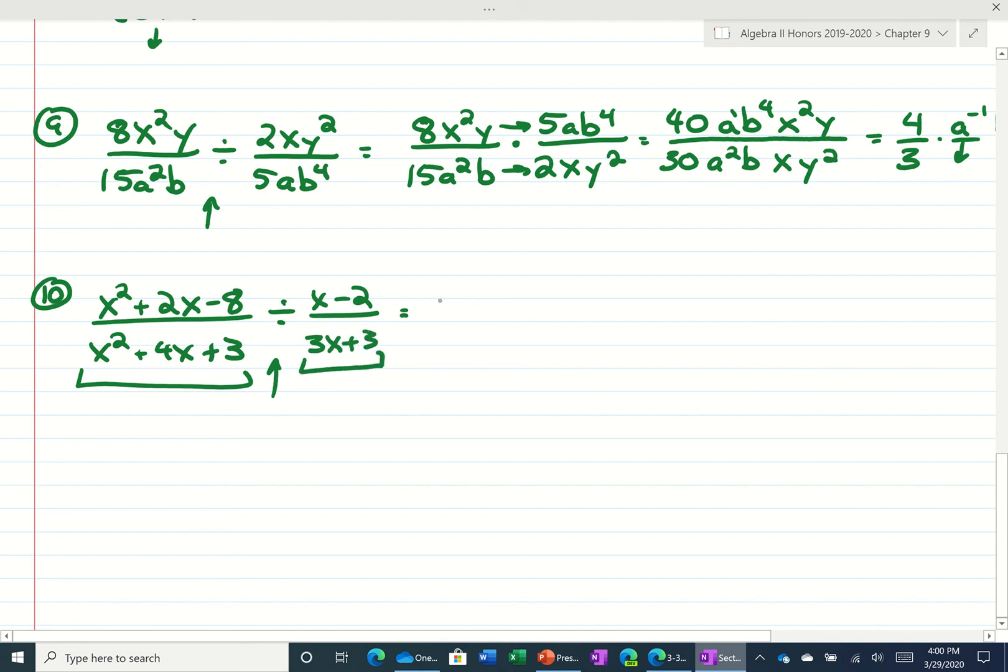So the first one, I'm going to keep this first fraction the same, but I am going to factor this. So it's going to be x plus 4 times x minus 2. And underneath that, it would be x plus 3 times x plus 1. Then I'm going to multiply by the reciprocal. If we factor out a 3, we get x plus 1. And on the bottom, we get x minus 2. So we are multiplying, which means I can cancel out the same factors on top and bottom. And it looks like we're just left with 3 times x plus 4 divided by x plus 3.